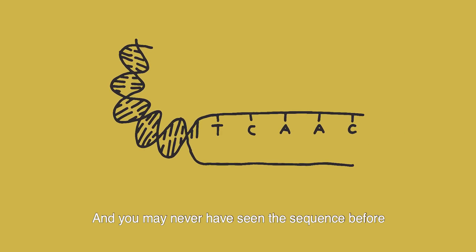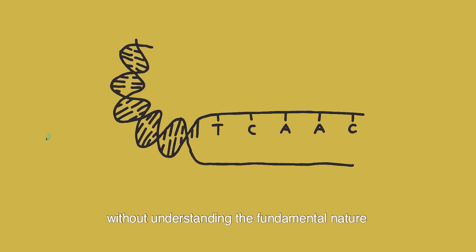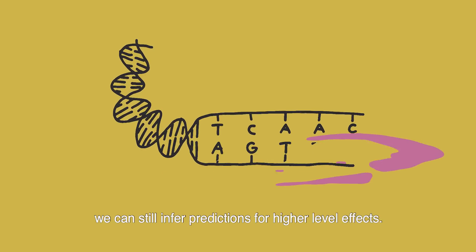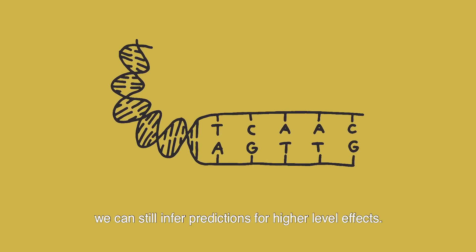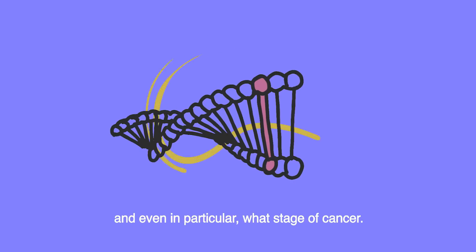And you may never have seen the sequence before, but by having enough sets of data, without understanding the fundamental nature of the gene involved, we can still infer predictions for higher-level effects. Effects such as whether this person has cancer, and even, in particular, what stage of cancer.